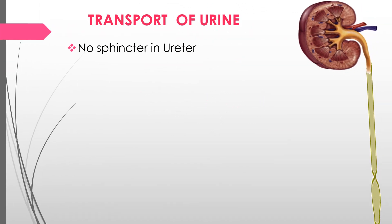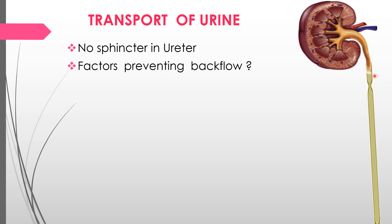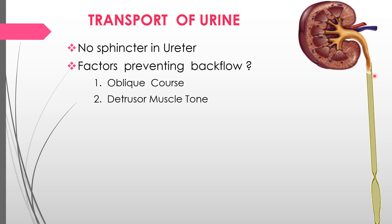There is no sphincter in the ureter. Backflow is prevented by the oblique course of the ureter through the bladder wall and the tone of the detrusor muscle in the bladder. As long as the detrusor is relaxed, there is no backflow under normal conditions. The ureter is opened by peristaltic contractions that increase ureteral pressure.